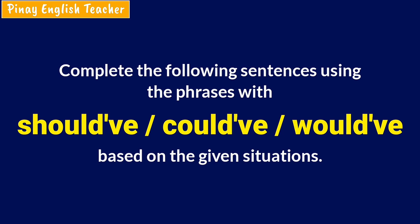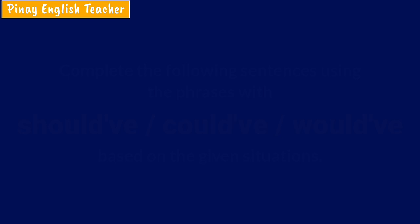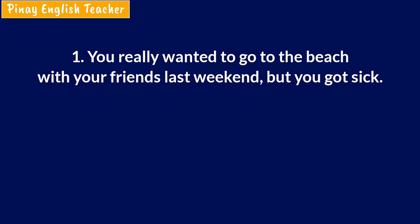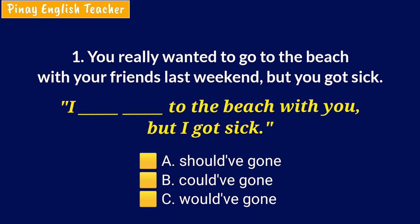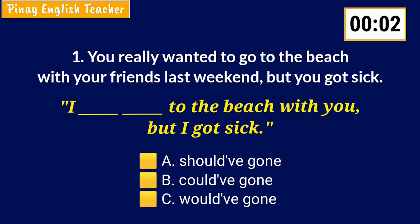Now let's start the quiz. Complete the following sentences using would've, should've, or could've based on the given situations. Number 1: The situation is you really wanted to go to the beach with your friends last weekend, but you got sick. You say: 'I _____ to the beach with you, but I got sick.' A. Should've gone. B. Could've gone. C. Would've gone. The answer is C — would've gone. You were willing to do something in the past but didn't do it because of a reason.